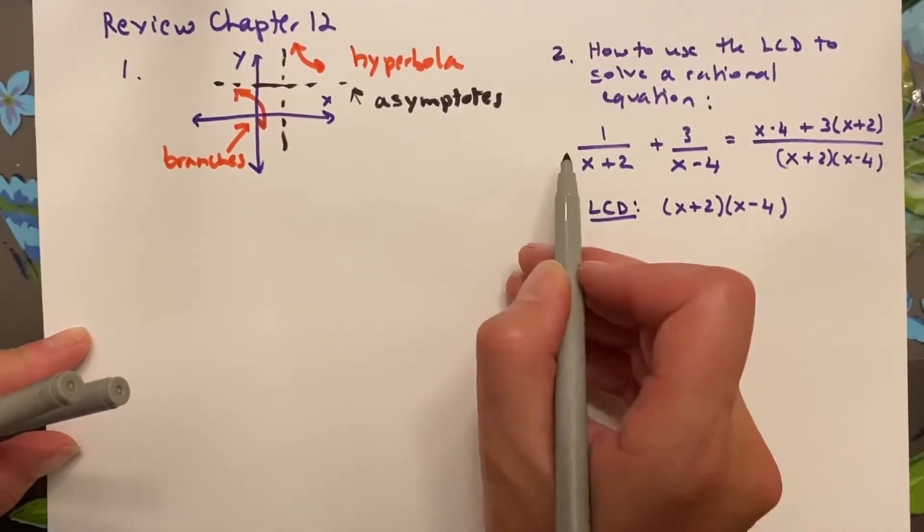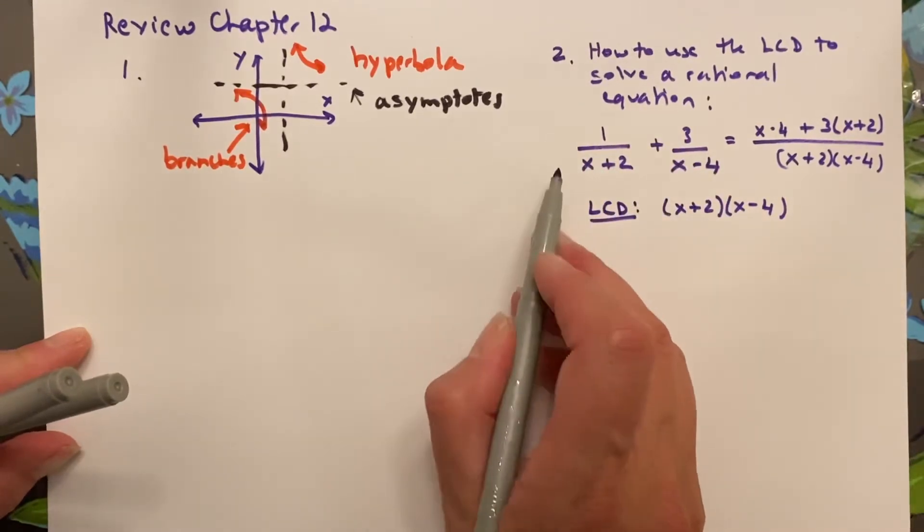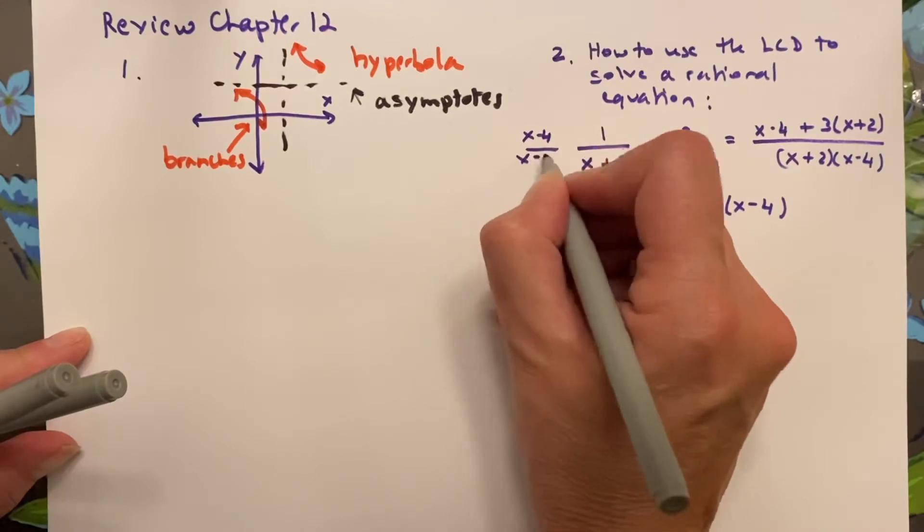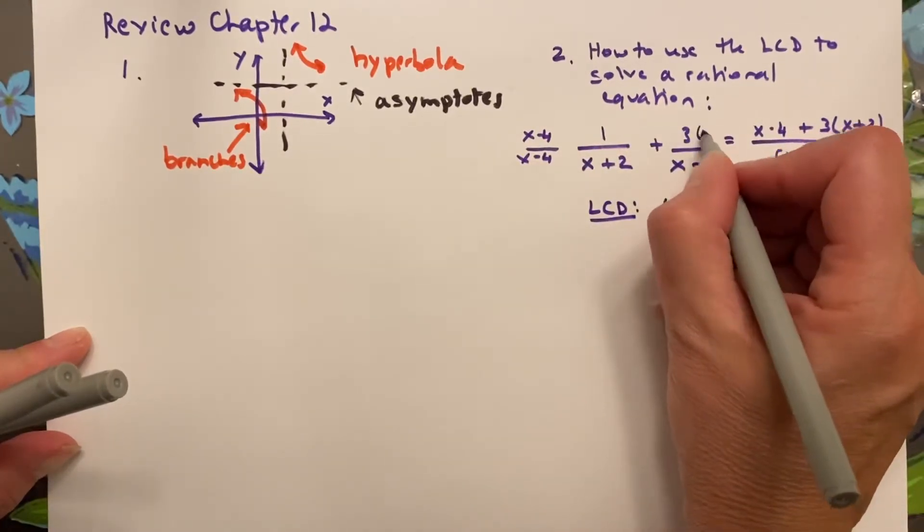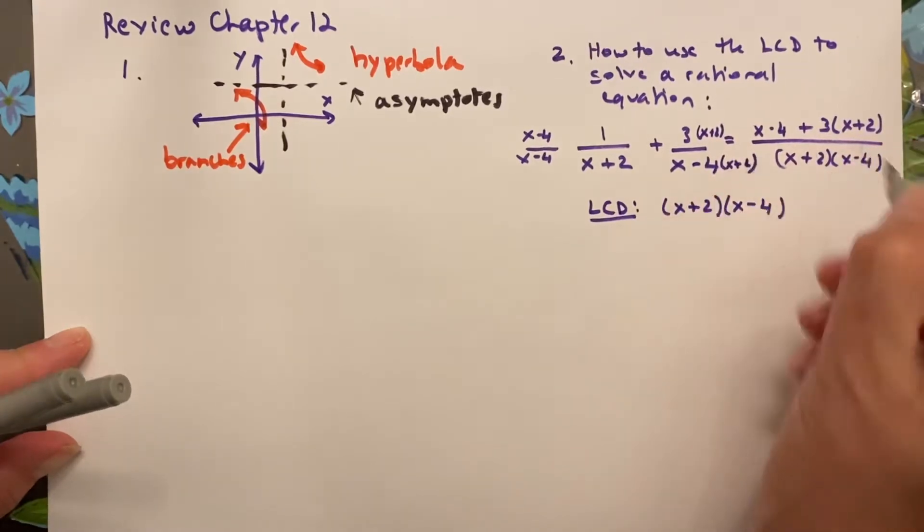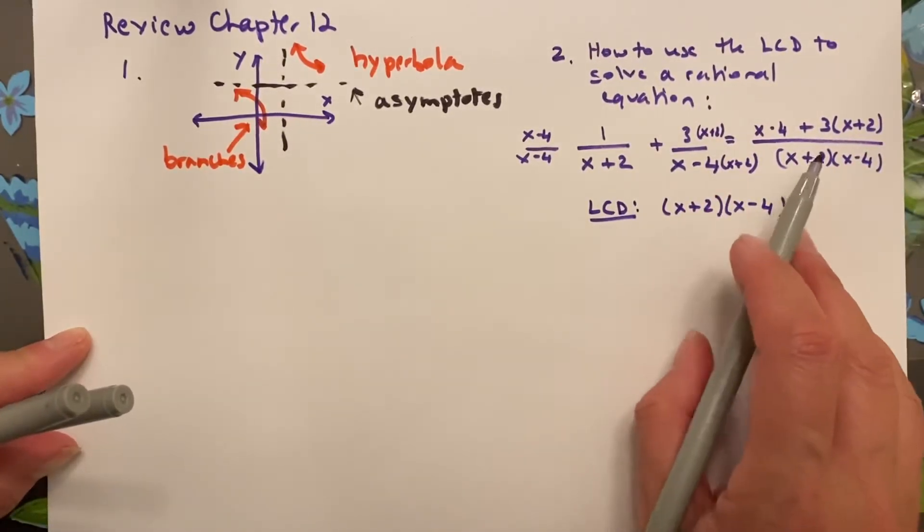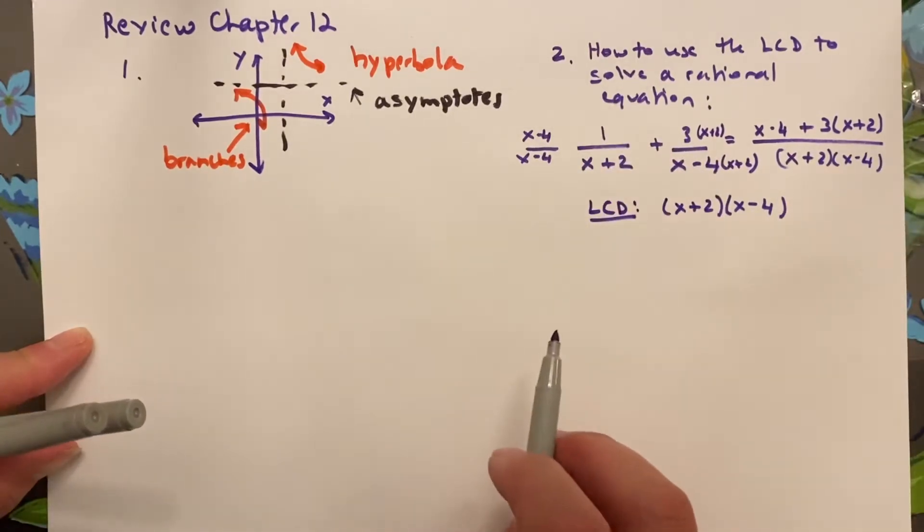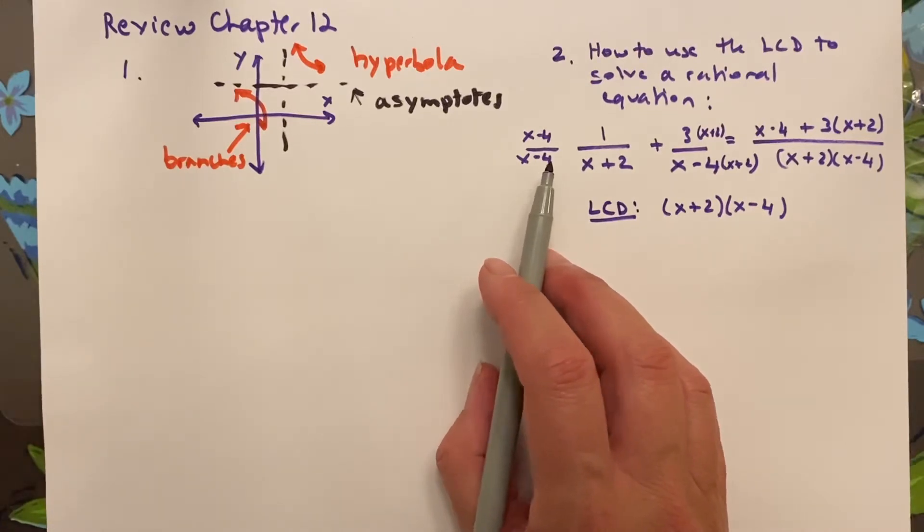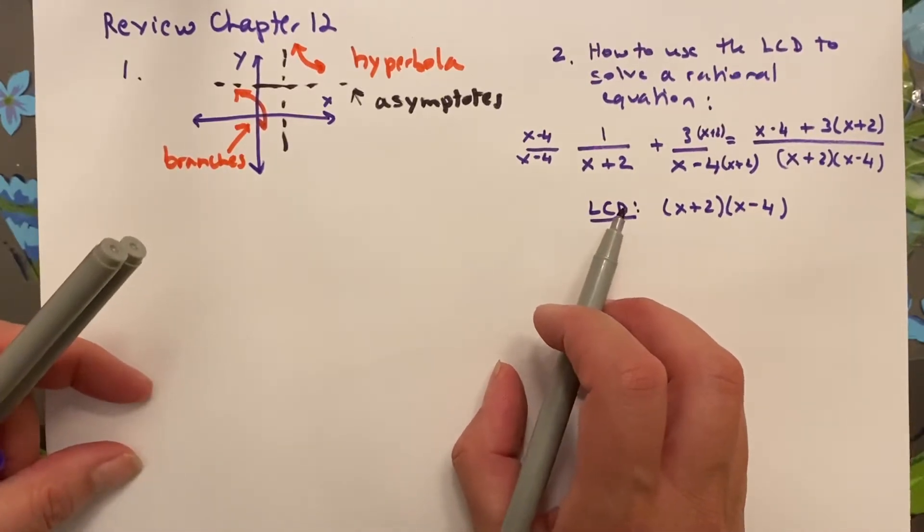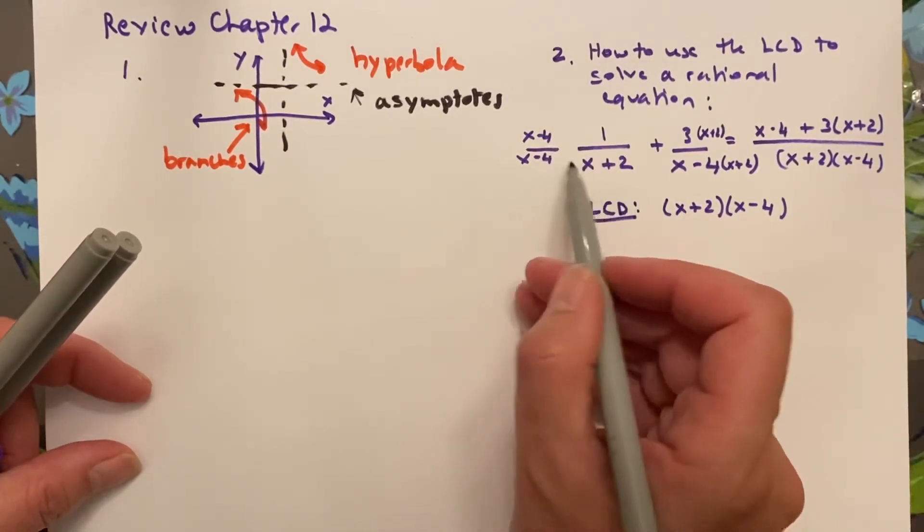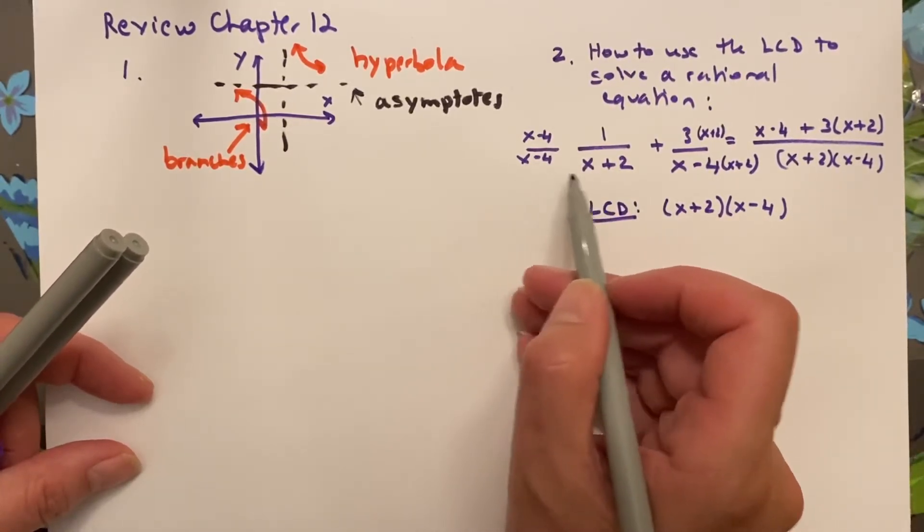Because you've multiplied this by x minus 4 over x minus 4, and you've multiplied this by x plus 2 over x plus 2. And then you just simplify. I'm not going to do it because we've answered the question. You find what the least common denominator is, and you multiply top and bottom by whatever it is that will make the least common denominator.